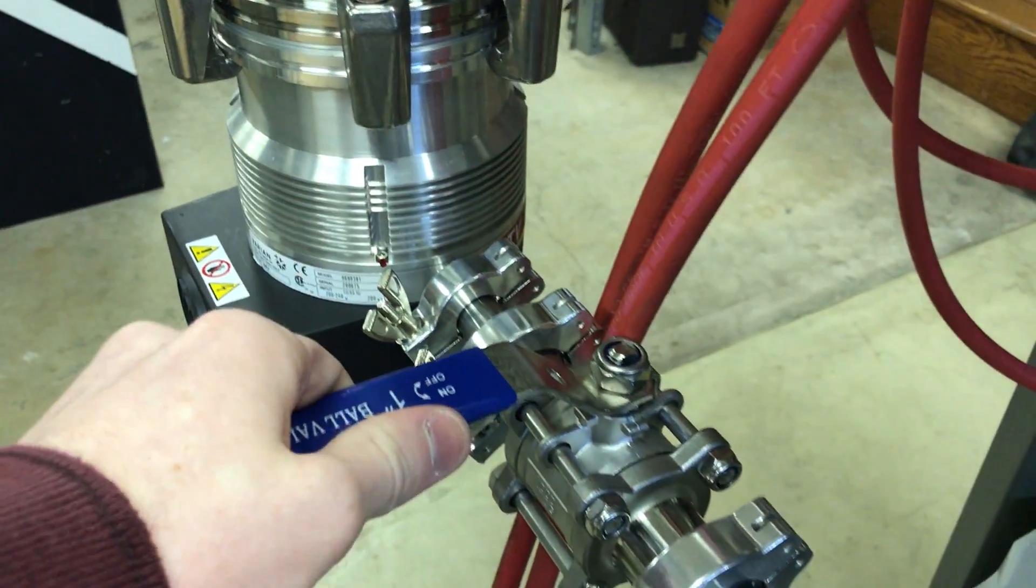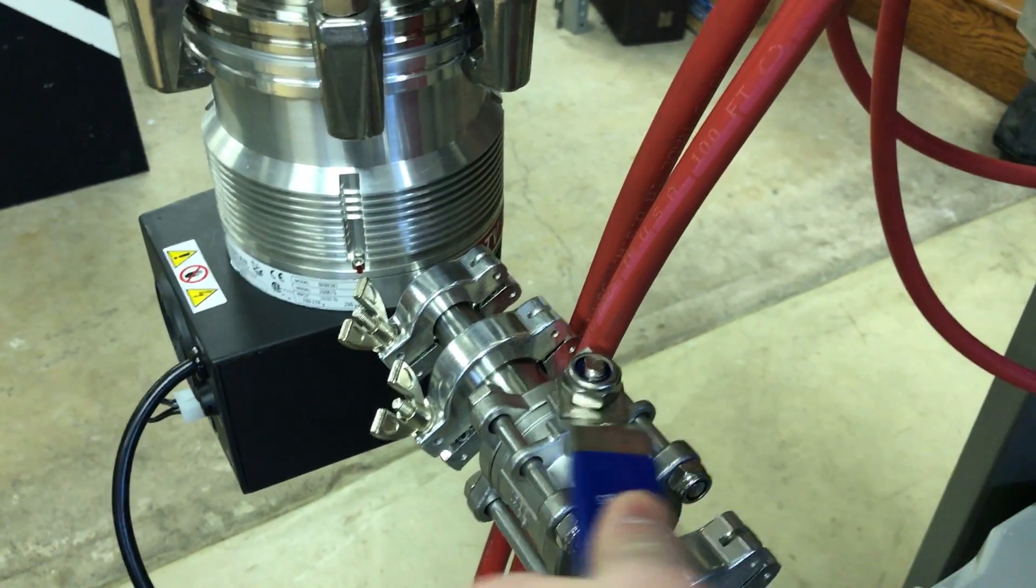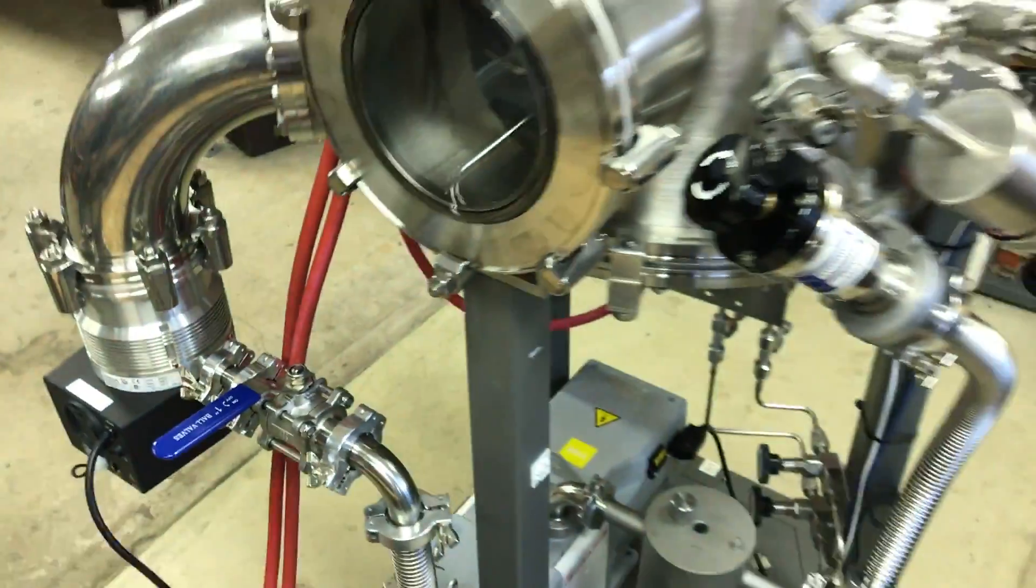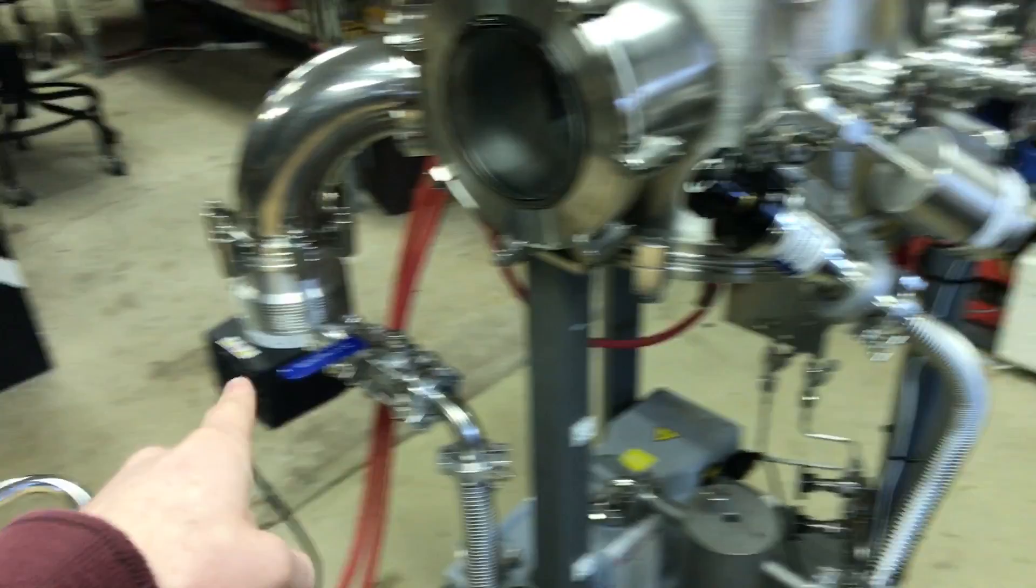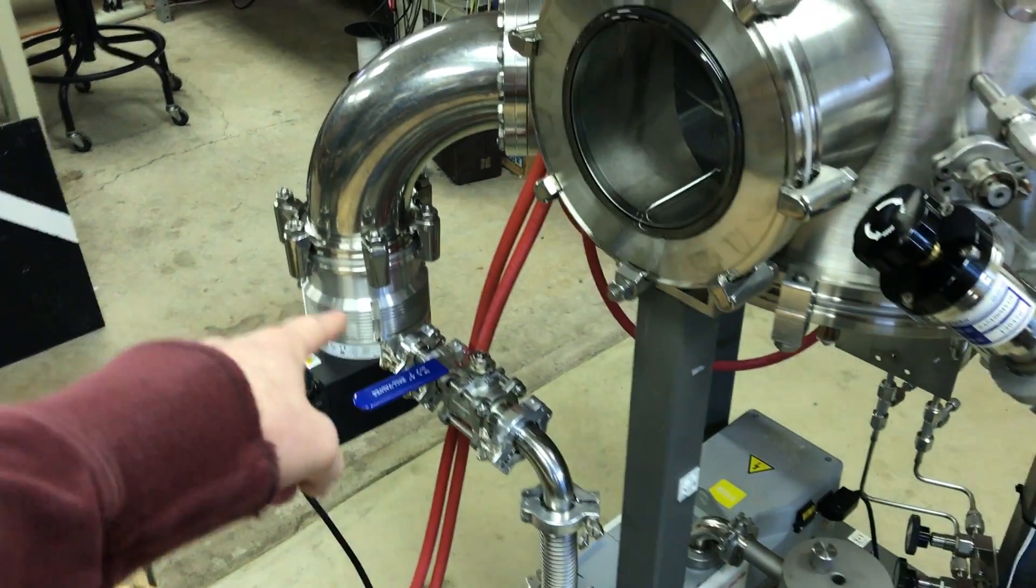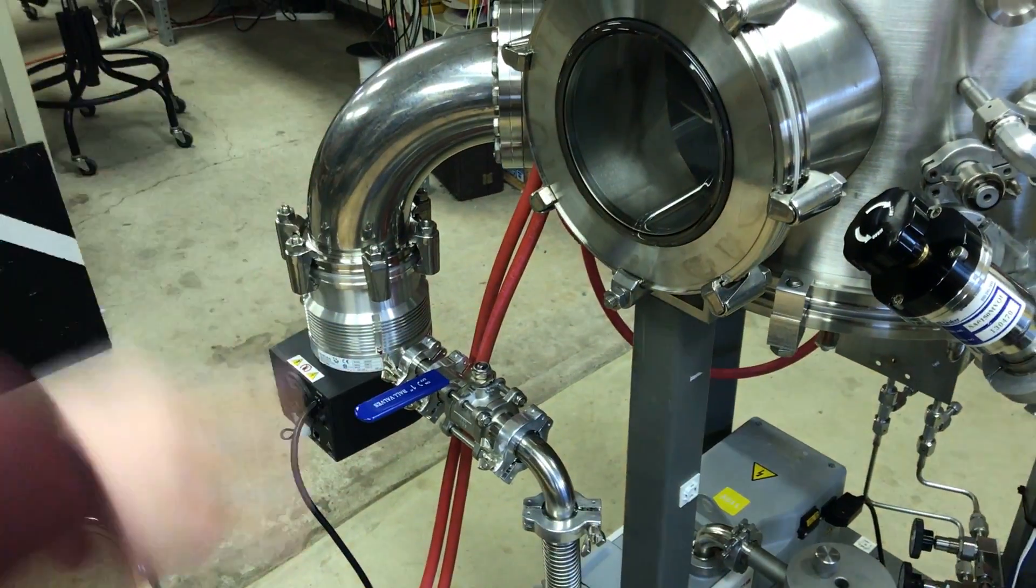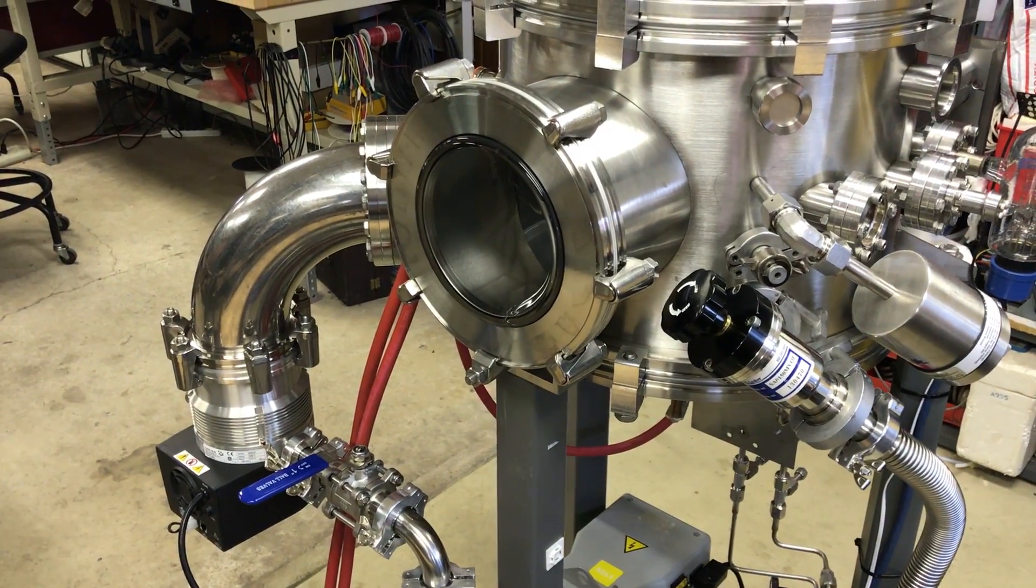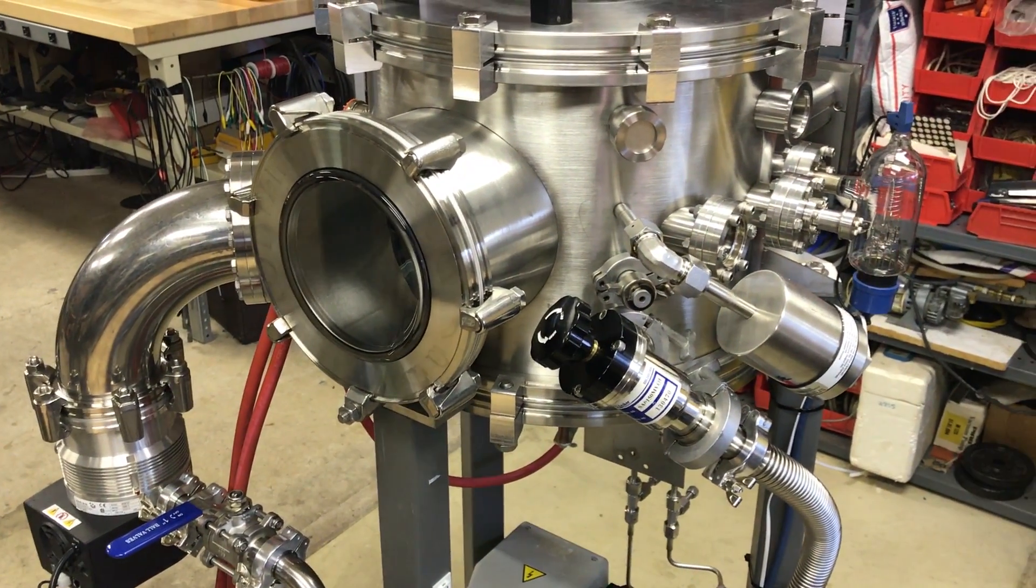So for the turbo pump to work effectively, we have to have this backing assembly. So I have the KF-25 hose through an elbow, and then this is just a valve, isolation valve, and then this goes to the backing port of the turbo. So once the chamber is pumped down, I close that valve, open the backing line, and then I pull through the turbo and spin up the turbo, etc.